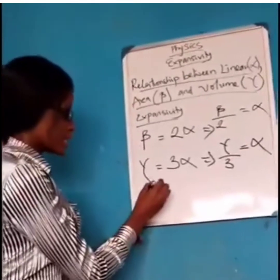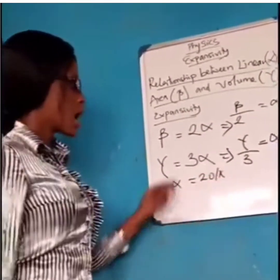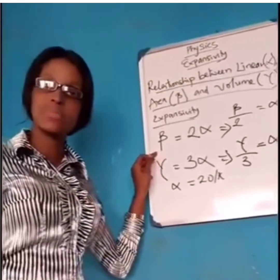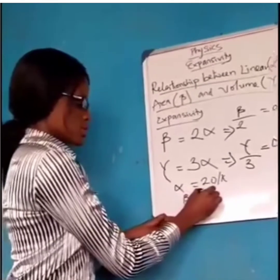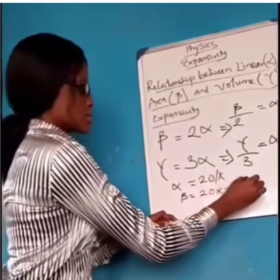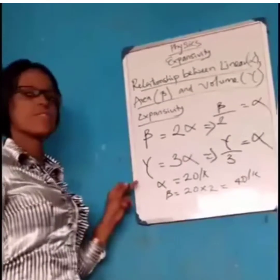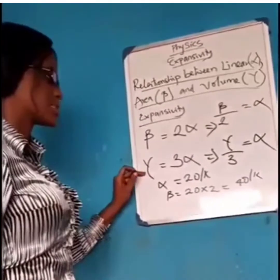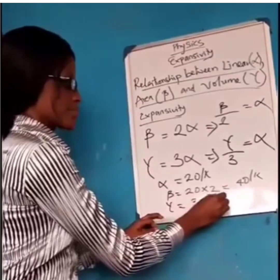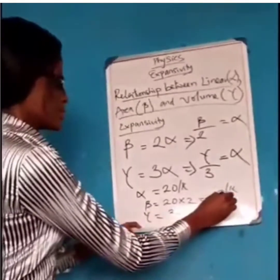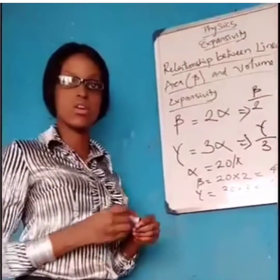A simple example: when you are given a linear expansivity of 20 per Kelvin and asked to find the area expansivity, it will simply be 20 times 2, which is 40 per Kelvin. And the volume expansivity will be 20 times 3, which is 60 per Kelvin as your gamma expansivity.